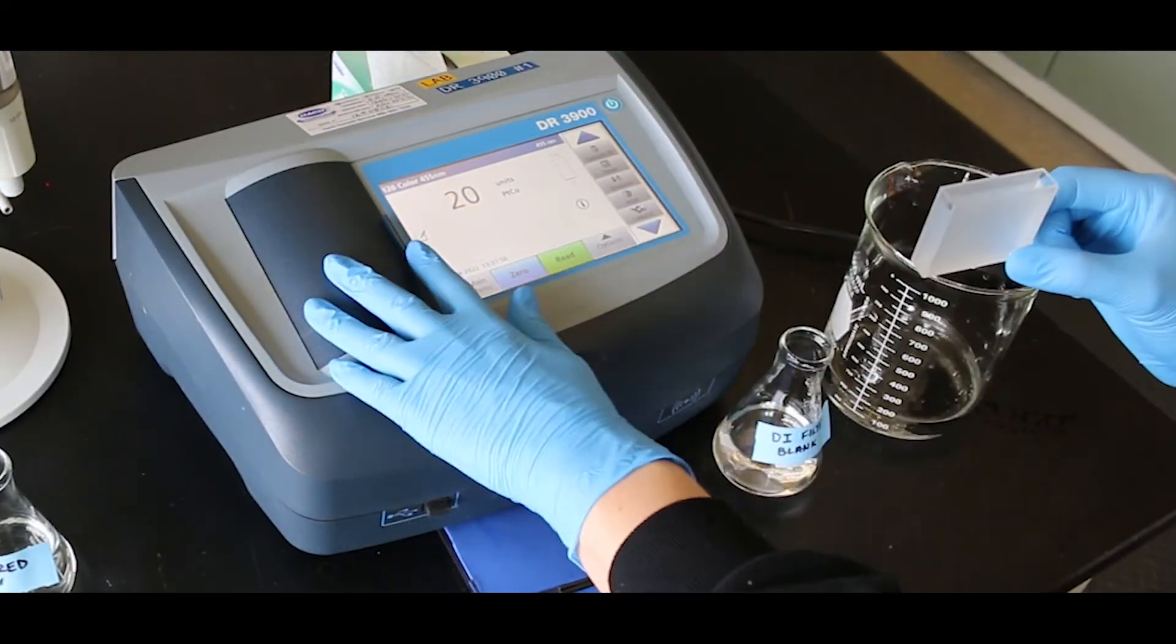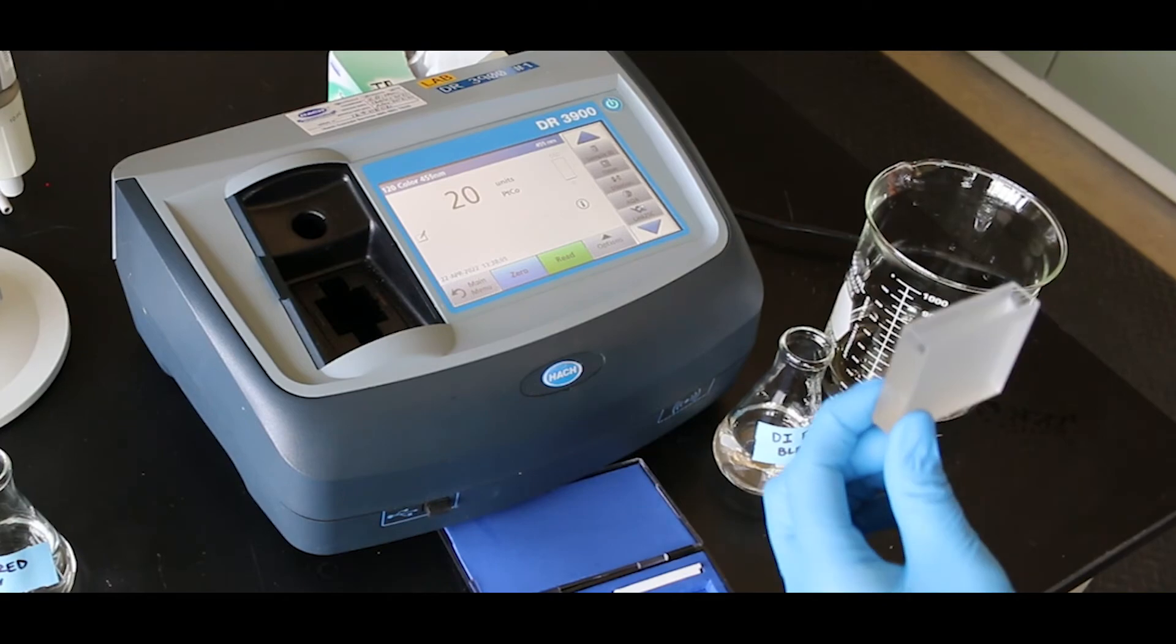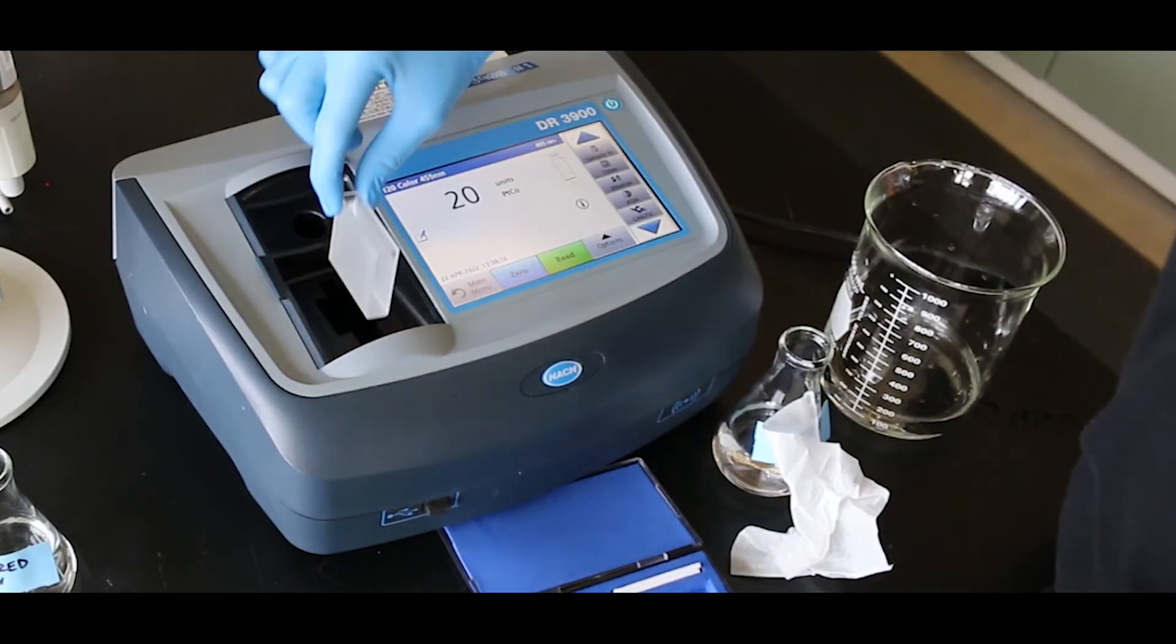For very low levels, a rectangular cell with a longer path length can also be used. See the method for details.